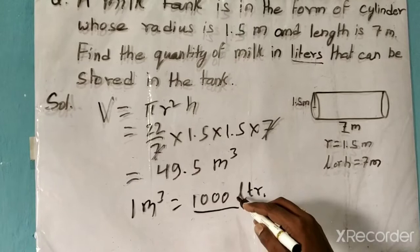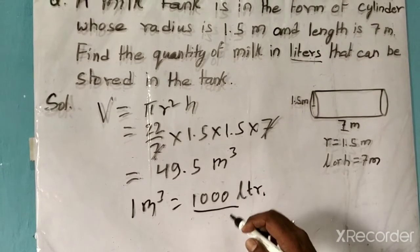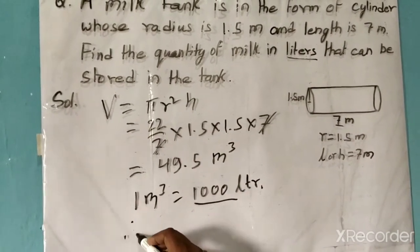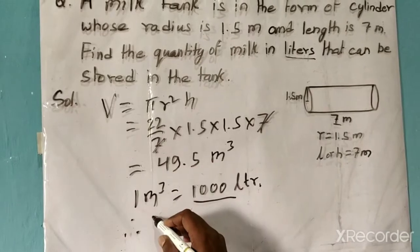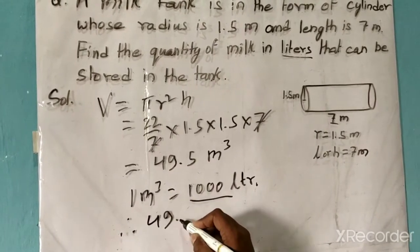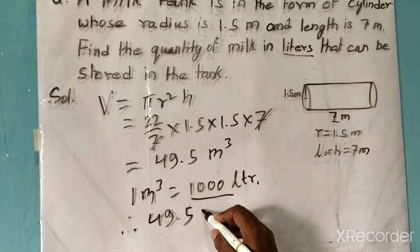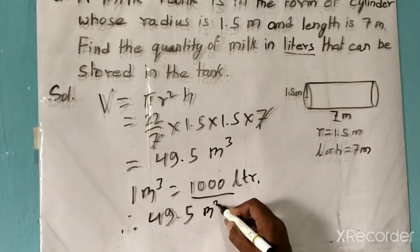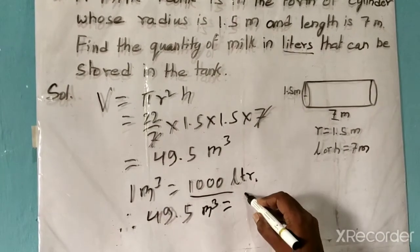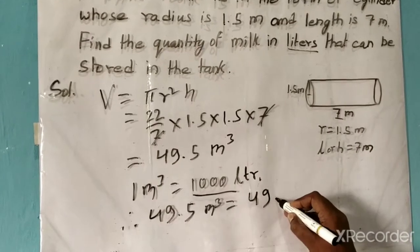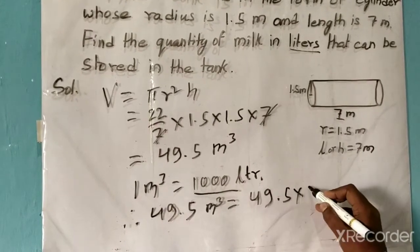Therefore 49.5 cubic meters is equal to 49.5 times 1000 liters.